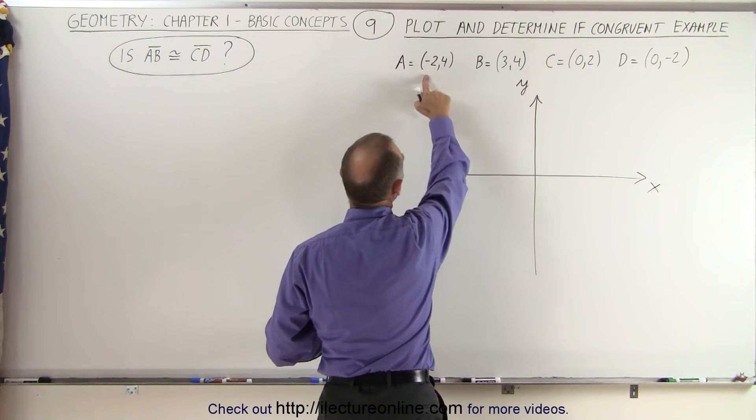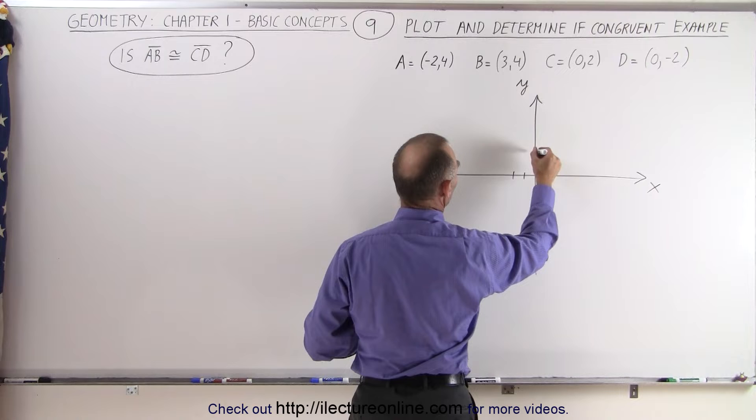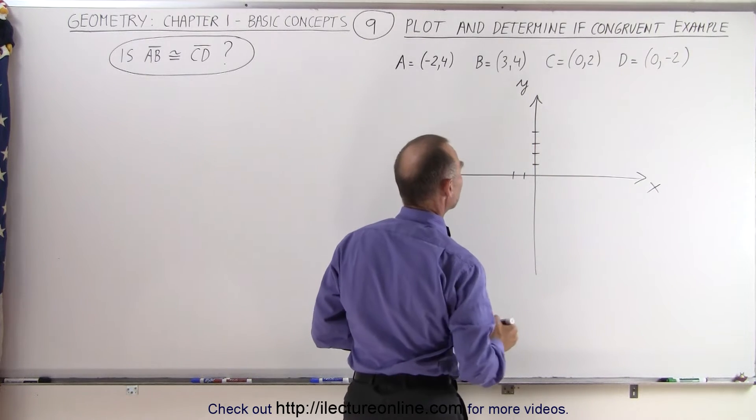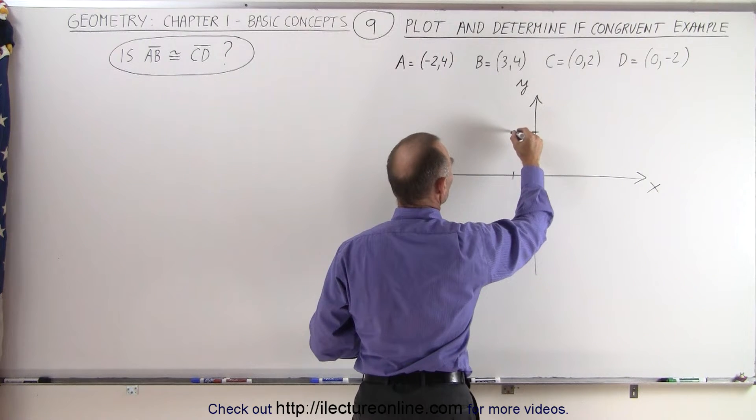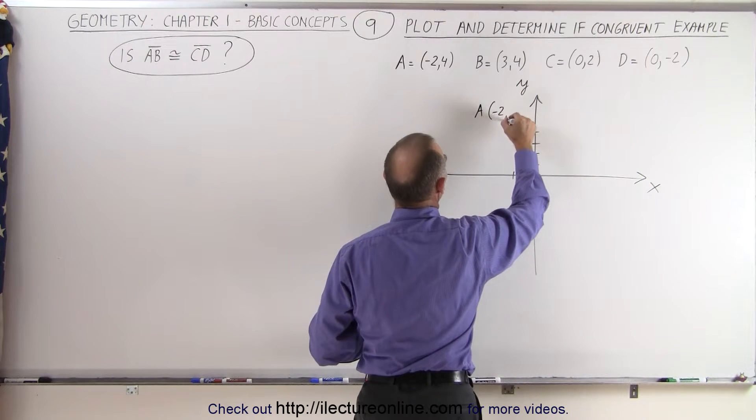First point A: negative 2, 4. So that's two points in the negative direction on the x-axis, four spots in the positive direction on the y-axis. So there's our point A, and the coordinates are negative 2 and 4.